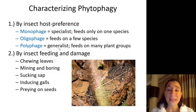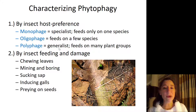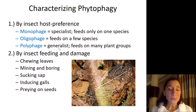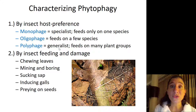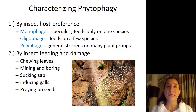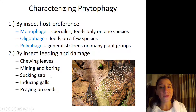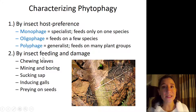Many insects have chewing mouthparts, so they may chew leaves. Other insects might mine or bore through leaves or stems. Other insects — particularly those with piercing-sucking mouthparts — will suck out the sap. Some insects will induce galls on plants. And finally, many insects will prey on the seeds — seed predation. We'll talk in more detail about all of these different feeding strategies and the types of damage that insects can cause on plants.